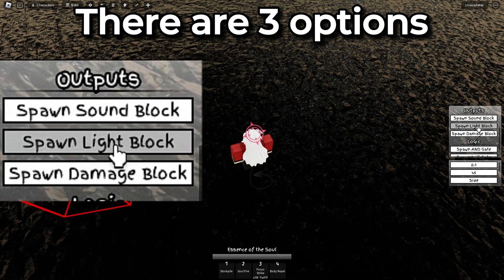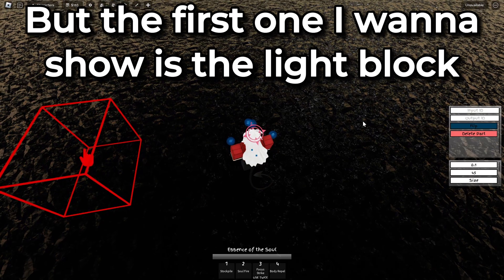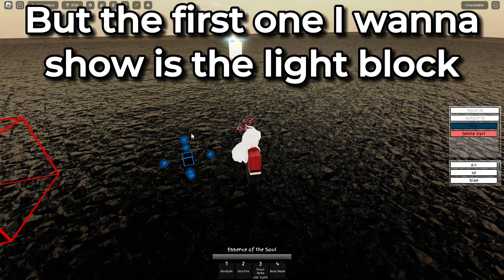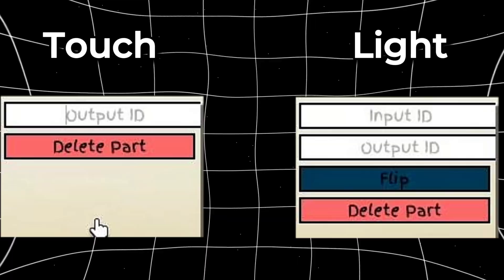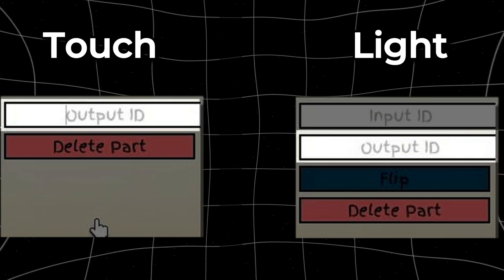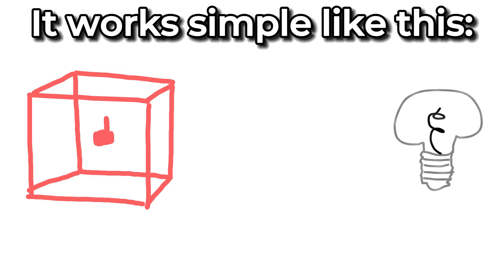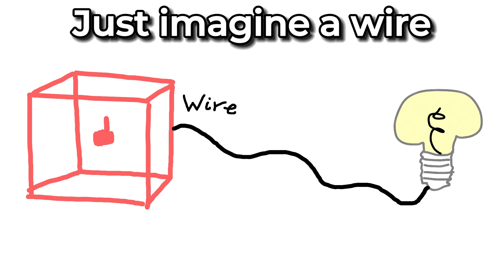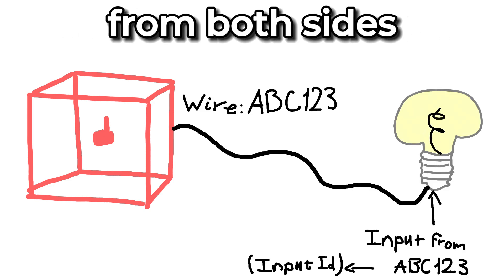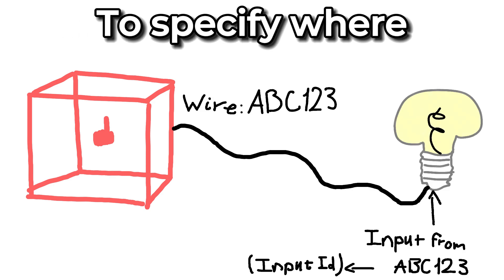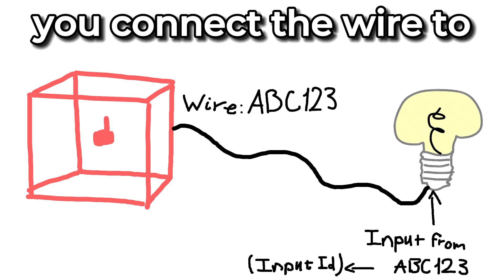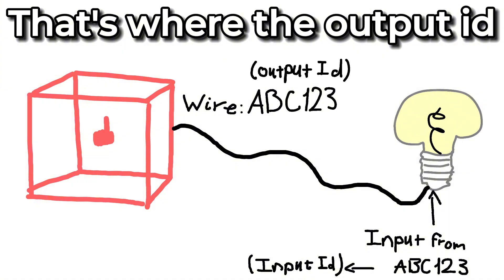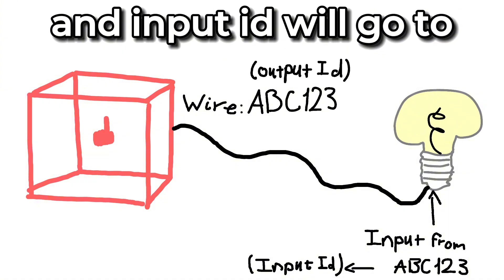The next one are the output blocks. There are three options, but the first one I want to show is the light block. Now in these blocks, there are input and output IDs. It works simple like this — just imagine a wire that you can name from both sides to specify where you connect the wire to. That's where the output ID and the input ID goes to.